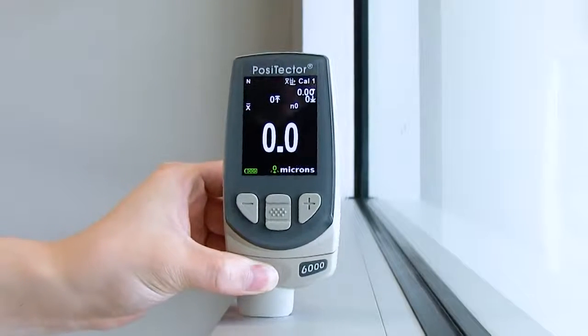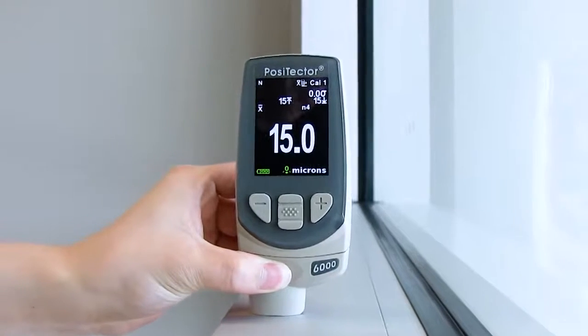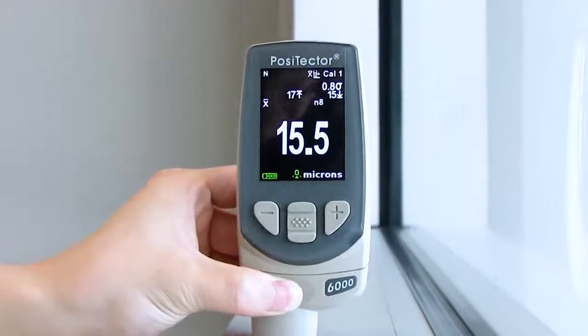In addition to these faster speeds, Positector 6000 models now feature two new scanning modes.